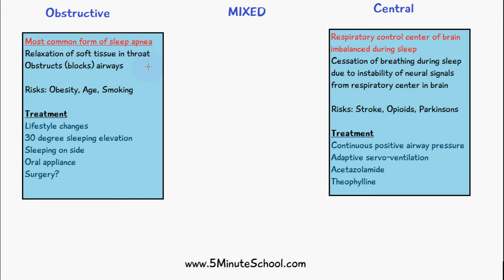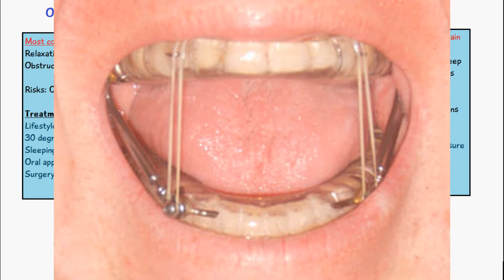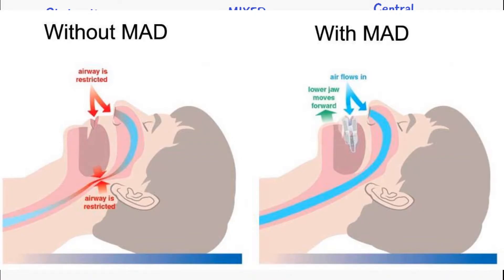Another treatment method is sleeping with a 30-degree elevation — this angle stops the airways of the throat getting blocked. Sleeping on the side has the same effect. We can also use an oral appliance, which looks like this, known as a mandible advancement device. This also prevents the soft tissues in the back of the throat from blocking the airways.